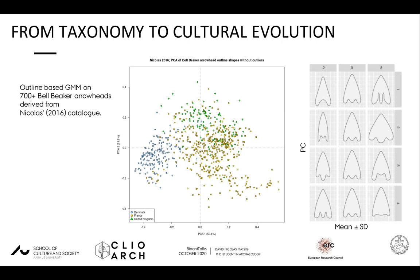The scatterplot of the first two PC scores already shows a clear distinction between the artifacts from the different countries, with a certain overlap between the ones from France and the UK, which can be expected because of their geographical closeness. Furthermore, we were able to cluster the artifacts into meaningful and homogeneous groups using hierarchical clustering.